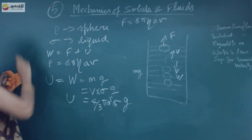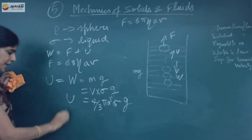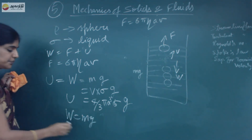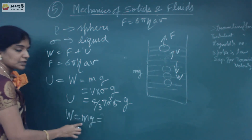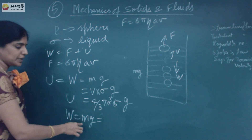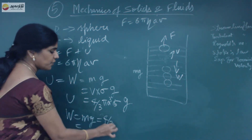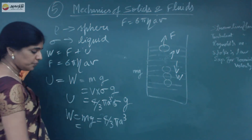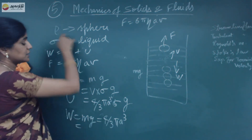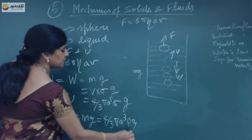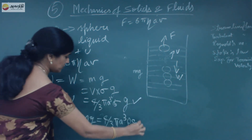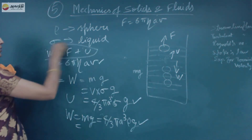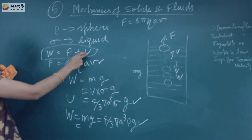Now W — the weight of the sphere — equals mass times g. Mass equals volume times density, so W equals (4/3)πa³ρg. Now we know what U is, what W is, and what F is. Substituting W, F, and U into the formula W equals F plus U.